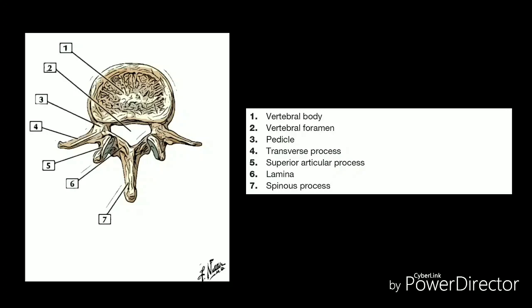Under each pedicle, a pair of spinal nerves exits the spinal cord and passes through the intervertebral foramen to branch out to your body. Surgeons often remove the lamina of the vertebral arch, called a laminectomy, to access the spinal cord and nerves to treat stenosis, tumors, or herniated discs. Seven processes arise from the vertebral arch: one spinous process, two transverse processes, two superior facets, and two inferior facets.